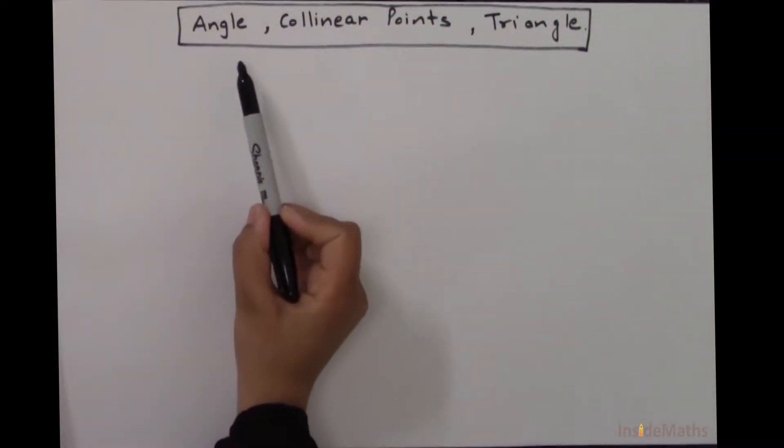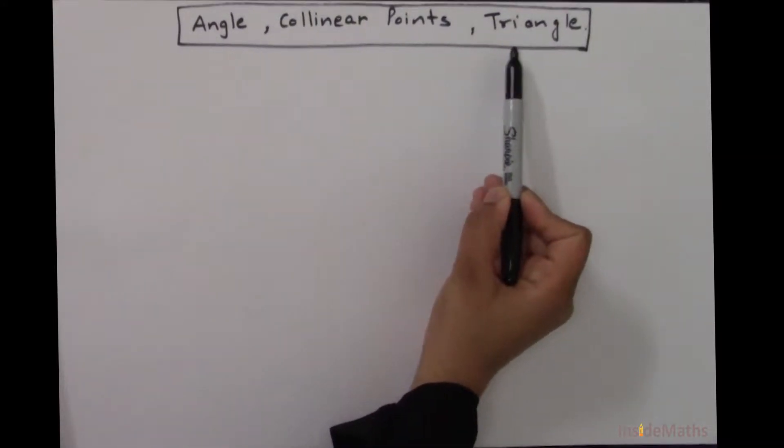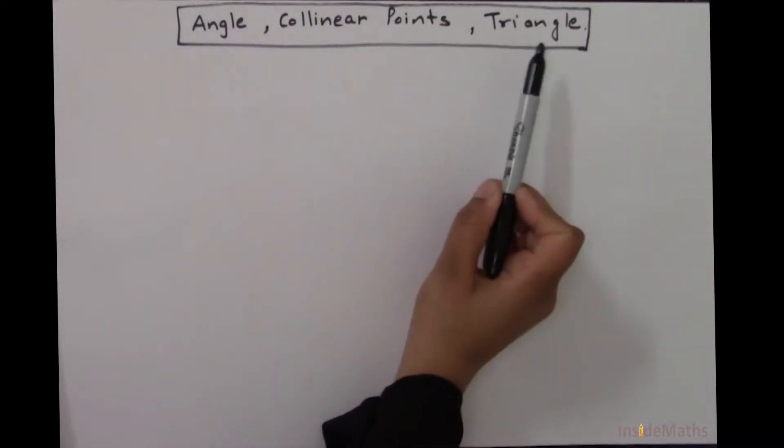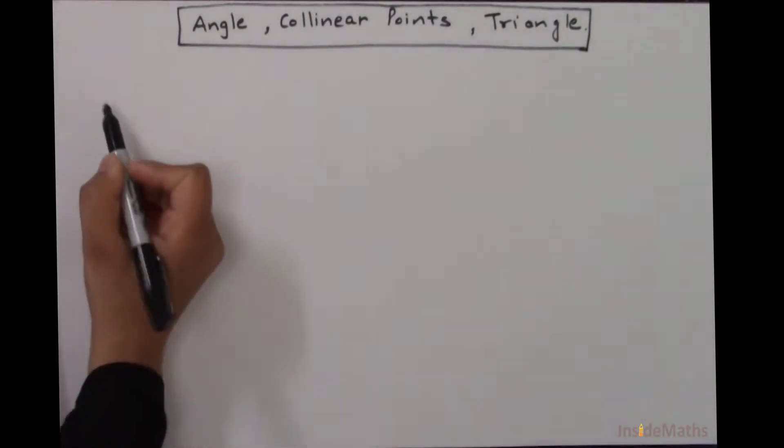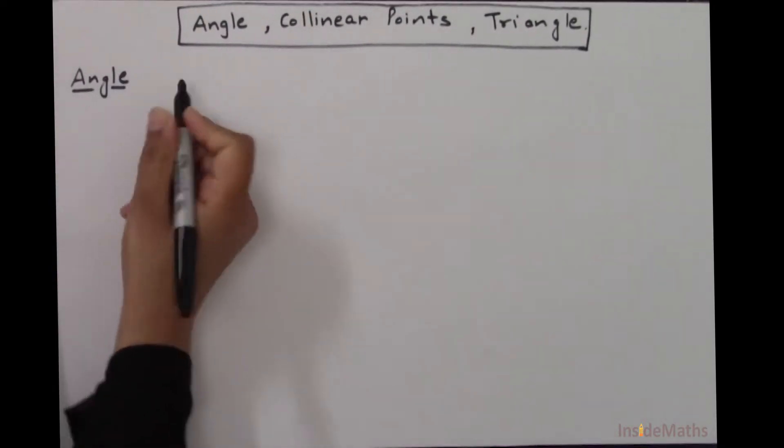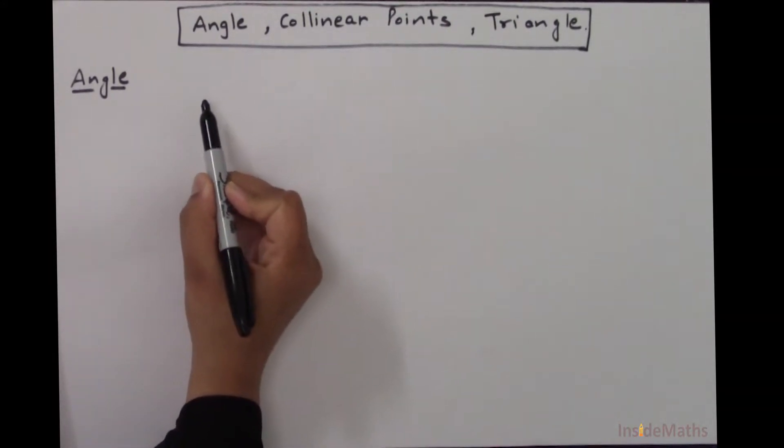In this video we'll see what is an angle, what are collinear points, and what is a triangle. Just the basic definition of these three. So first we'll see what is an angle. An angle is made up of two rays with a common endpoint.